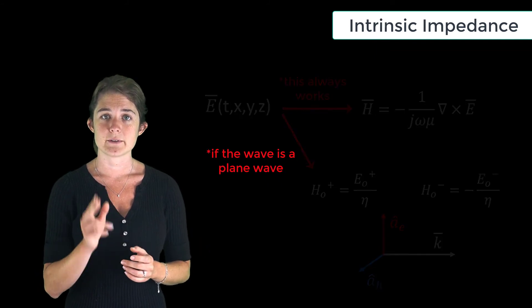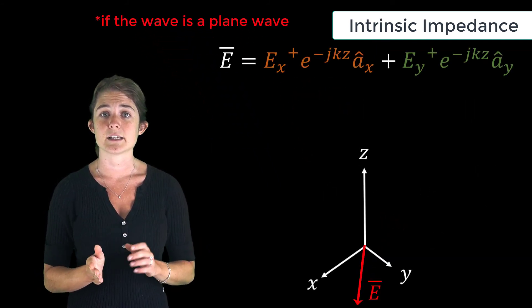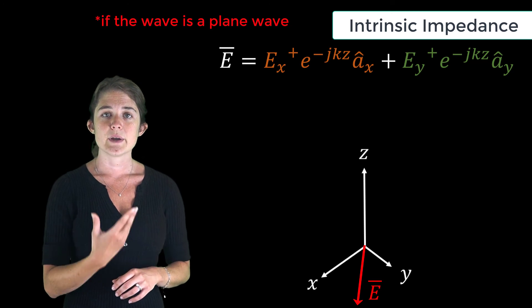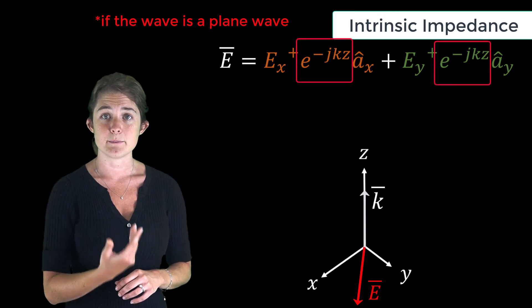For example, if we have an electric field pointing in positive x and positive y, given by this equation, we can see that propagation is in plus z.